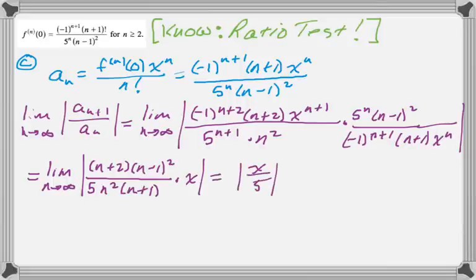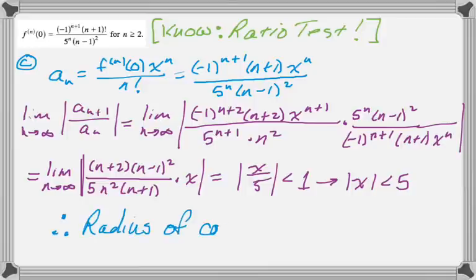So all that we're going to be left with is really the absolute value of x over 5. And the ratio test tells us that this thing will converge whenever that ratio is less than 1. And if that ratio is less than 1, it implies that the absolute value of x is less than 5. And that means that the radius of convergence is 5.